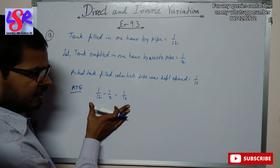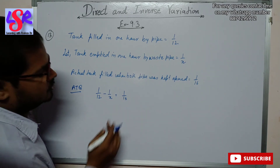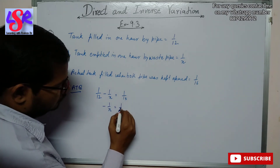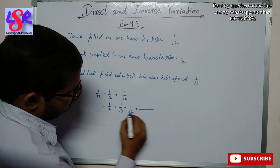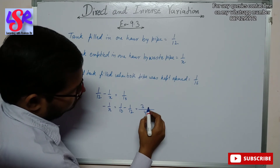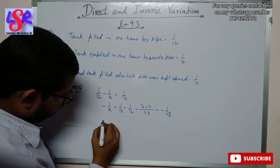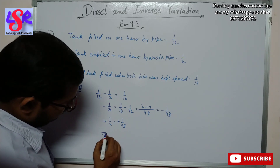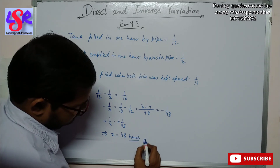We form the equation: 1 upon 12 minus 1 upon x equals 1 upon 16. Rearranging, 1 upon x equals 1 upon 12 minus 1 upon 16. Taking LCM of 12 and 16 as 48, we get 4 minus 3 = 1 upon 48. So x equals 48 hours as the answer.